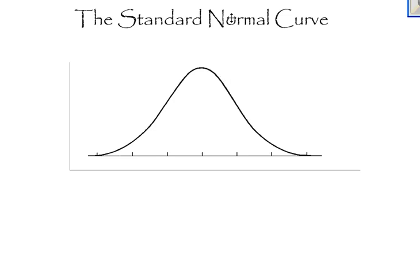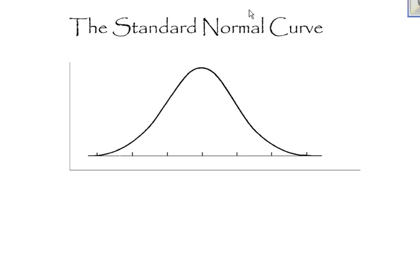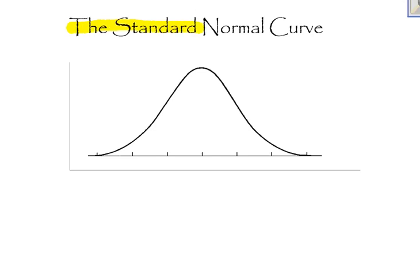In this video, I'm going to be talking about the standard normal curve. I'm saying the standard normal curve because I'm going to be using z-scores. If I'm talking about just any old normal curve, then the parameters of the mean and the standard deviation could be anything. But when I'm talking about the standard normal curve, that means I have normalized or standardized things by changing everything into z-scores.